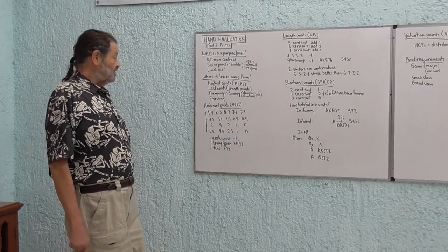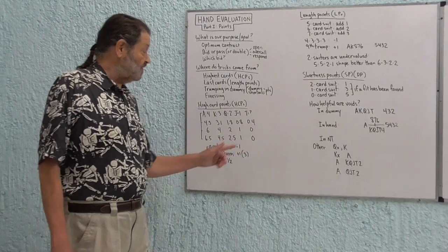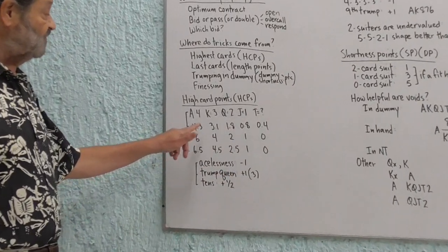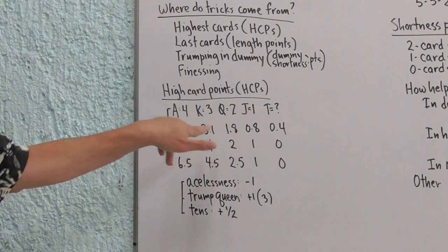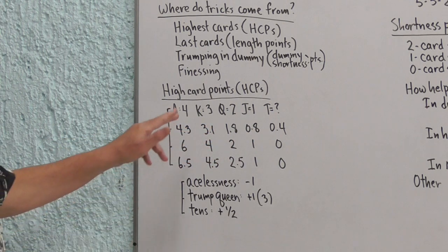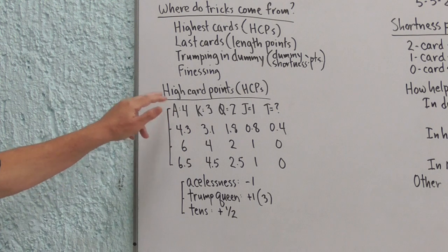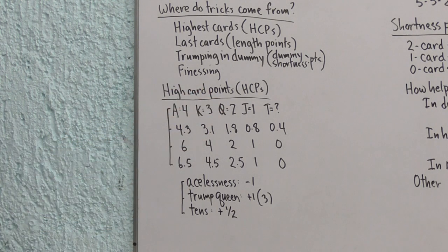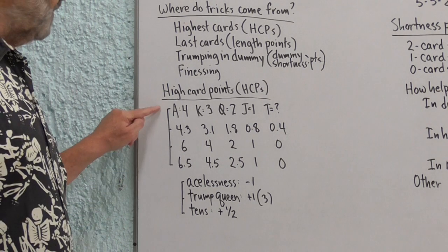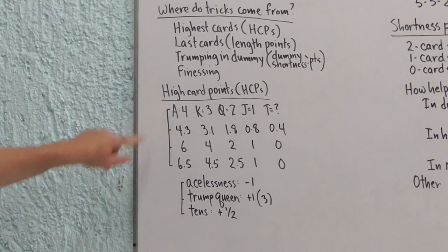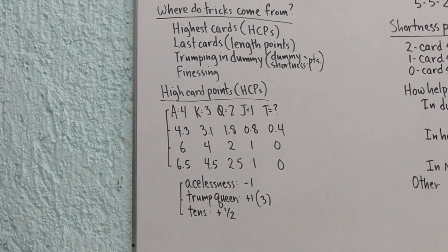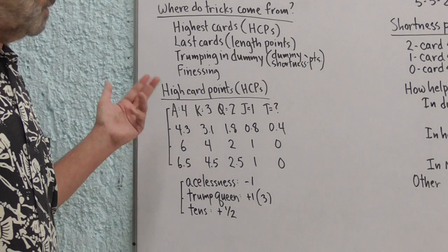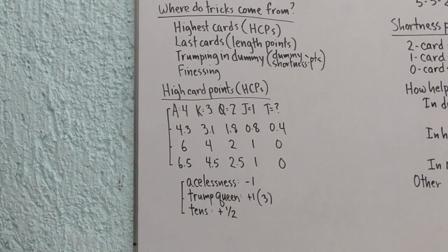Here's another way of looking at the relative strength of these cards. Give the ace 6, the king 4, the queen 2, the jack 1, and the 10 zero. Notice in this formulation, the king is worth double the queen. Whereas in this one, the ace is worth double the queen. Which of those is more accurate? Well, I think you're going to have to choose yourself. In the end, we're going to go back to this system. But we're going to make modifications to account for these differences. And here's just one more that I found somewhere. 6.5, 4.5, 2.5, 1, and 0.